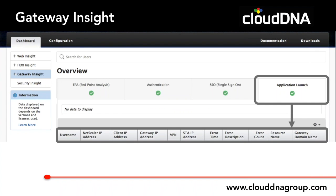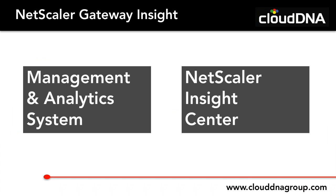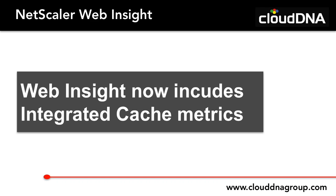Gateway Insight allows drilling down into errors and EPA (Endpoint Analysis) methods, troubleshooting user authentication errors, and understanding single sign-on issues to find the root cause immediately. It also troubleshoots application launch issues within HDX sessions — for example, why a XenApp or XenDesktop application failed to open. Similarly, web Insight now includes integrated cache metrics in platinum edition, showing how many times the cache has been hit and flagging any restrictions causing further challenges.